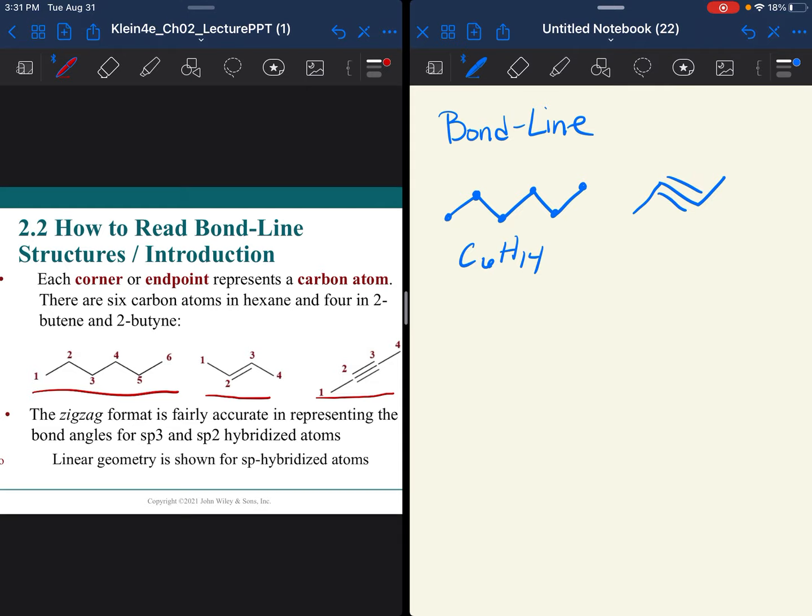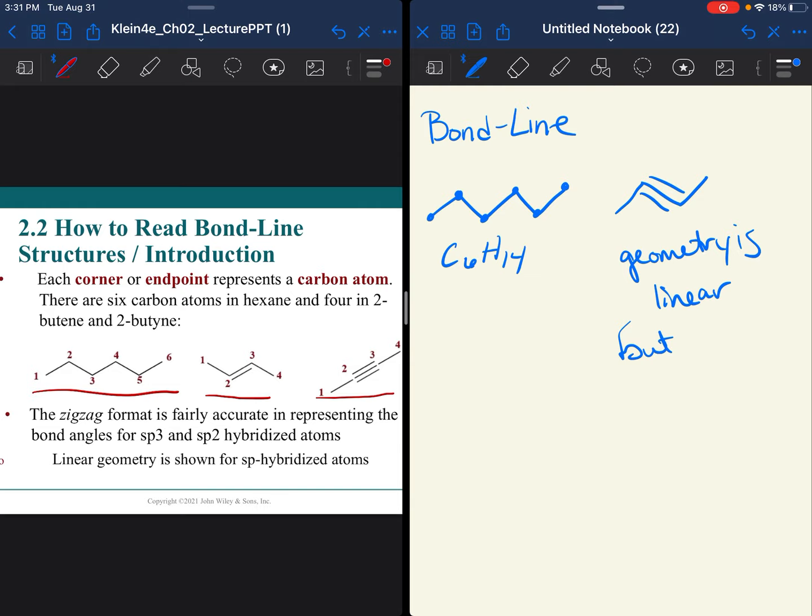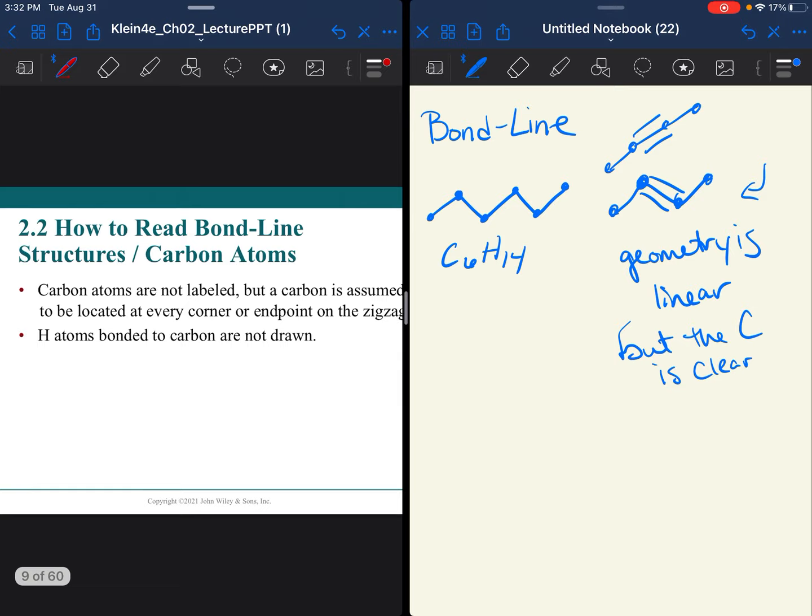When I do a triple bond, sometimes I still will draw it as a zigzag. The geometry is linear, but the vertex is clearer this way. I don't mind if you draw it this way or the way I drew it first. I just like to make it very clear that that's one, two, three, four carbons. It's just to make sure that when we count our carbons, we don't lose one.